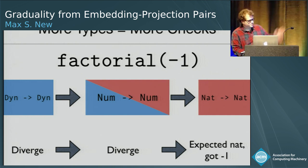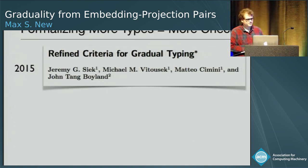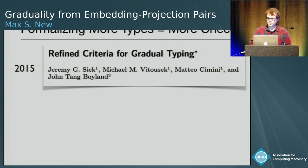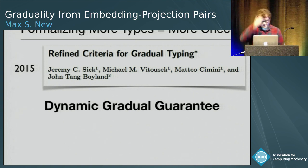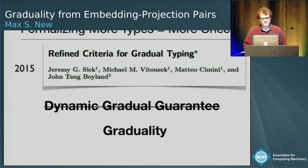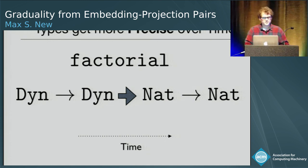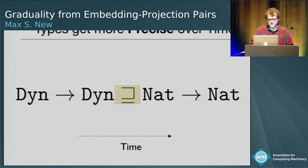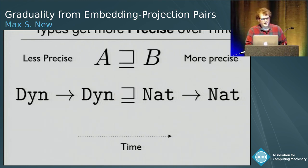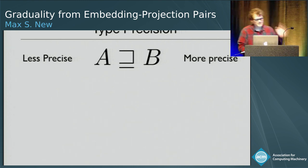So what should this property be formalized as? A few years ago at SNAPL, a paper by Siek, Vitousek, Cimini, and Boyland proposed a property they called the dynamic gradual guarantee. I like to call it the graduality property, because it's in some sense the parametricity property for gradual types — and we'll see a little more of that connection later. The model is that typing annotations get more precise over time. We formalize this with an ordering on types called the precision ordering.